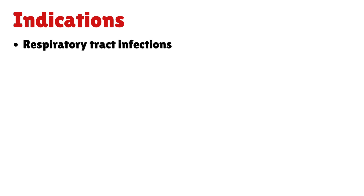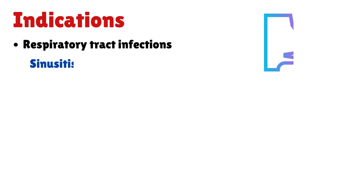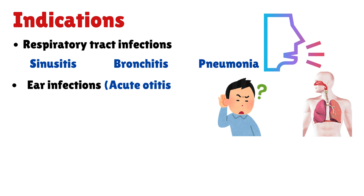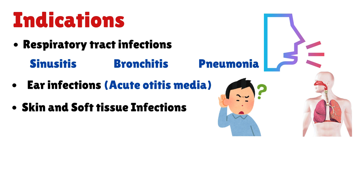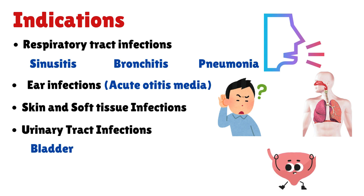Indications: Augmentin is prescribed for infections such as respiratory tract infections including sinusitis, bronchitis, and pneumonia; ear infections such as acute otitis media; skin and soft tissue infections; urinary tract infections such as bladder infections and pyelonephritis; and dental infections.